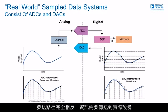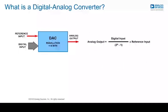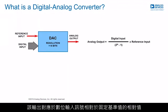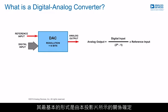The transmit path is the exact opposite, where the information needs to be delivered to a real-world device. The digital-to-analog converter produces an analog output which corresponds to the relative value of the digital input signal with respect to a fixed reference value, and in its most basic form is determined by the relationship shown on this slide.